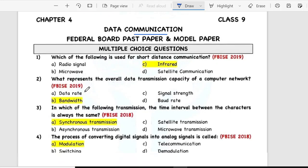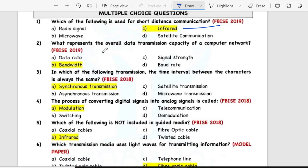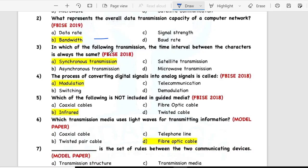Data communication. The following is used for short distance communication: infrared. Number two is what represents the overall data transmission capacity of a computer network? Bandwidth. Third is in which of the following transmission the time interval between characters is always the same? Synchronous transmission. The process of converting digital signal into analog signal is called modulation.